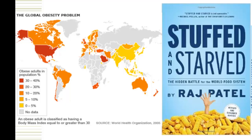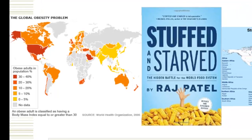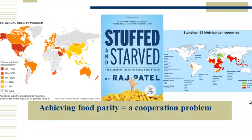The red and orange countries on the left are where you have the highest obesity rates. You'll notice that Saudi Arabia and the Arab Emirates have caught the United States in terms of obesity. So achieving food parity is also a cooperation problem.